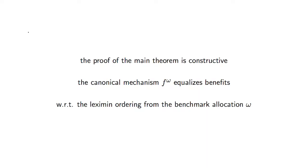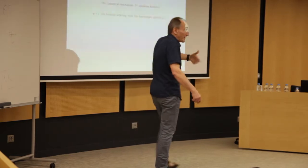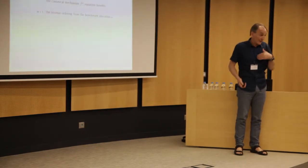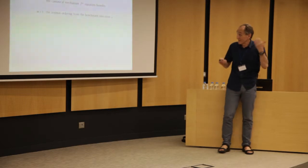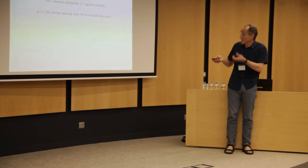The proof is constructive and fairly simple because it's, in the similar to the uniform rationing rule, it's an egalitarian idea following this old concept that we know well, the leximin ordering and this ordering, which was proposed as a sort of alternative to the utilitarian ordering in post-Rohlsian social choice, we could say. So we basically, we start from the benchmark allocation and we equalize benefits.